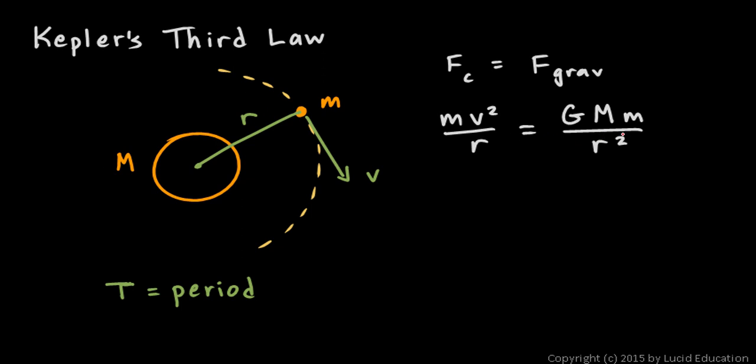Algebraically, you see what happens: the little m's will cancel on each side, and the r on the left will cancel one of the r's on the right. So we're left with v² equals G times capital M over r. That's an equation we've seen before.